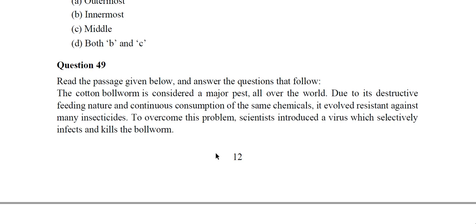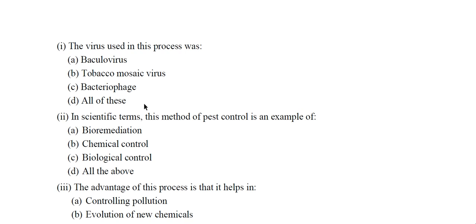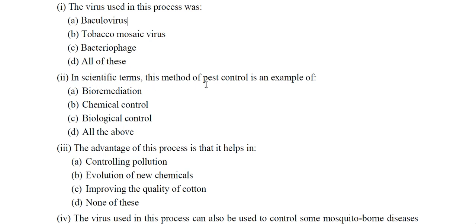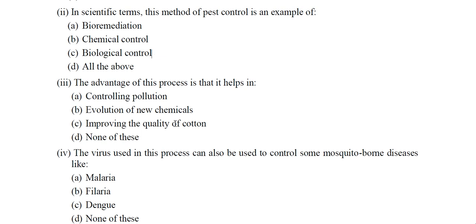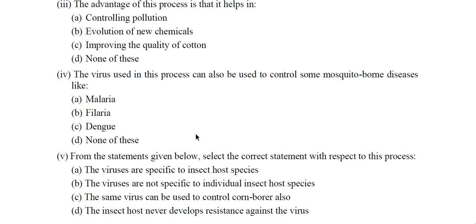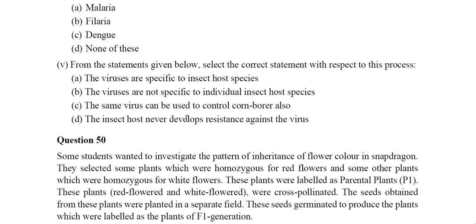Question 49 (Passage): The cotton bollworm is a major pest worldwide. Due to resistance against many insecticides, scientists introduced a virus — Baculovirus (option A) — which selectively infects and kills the bollworm. This is an example of biological control, option C. The advantage is that it helps in controlling pollution. The virus can also be used to control mosquito-borne diseases like malaria, option A. The correct statement with respect to this process is option A.